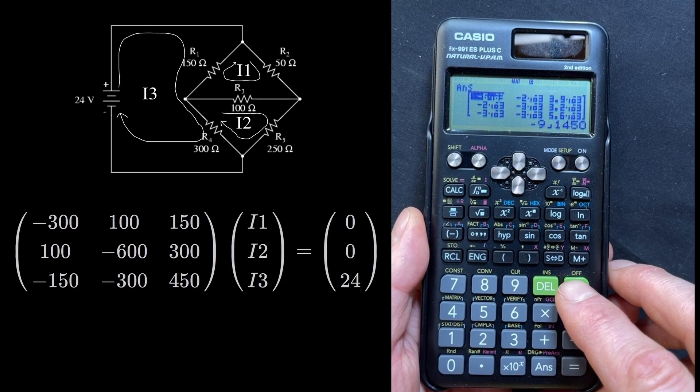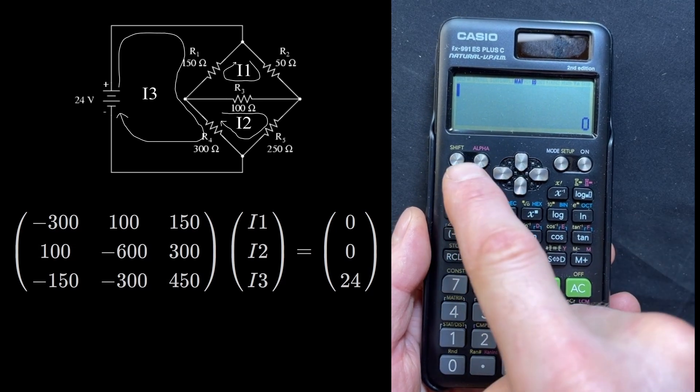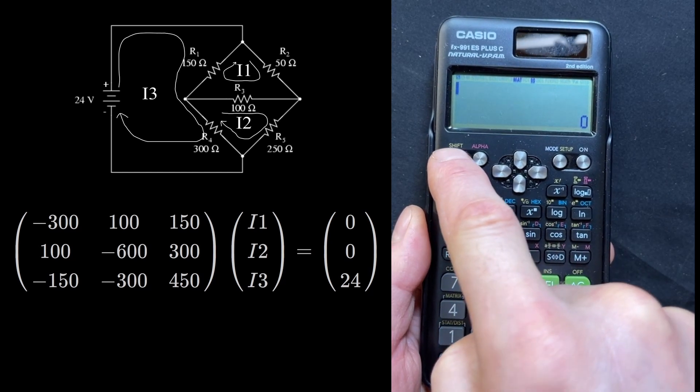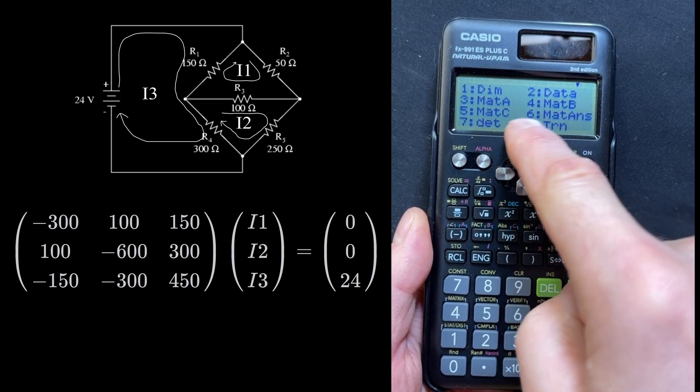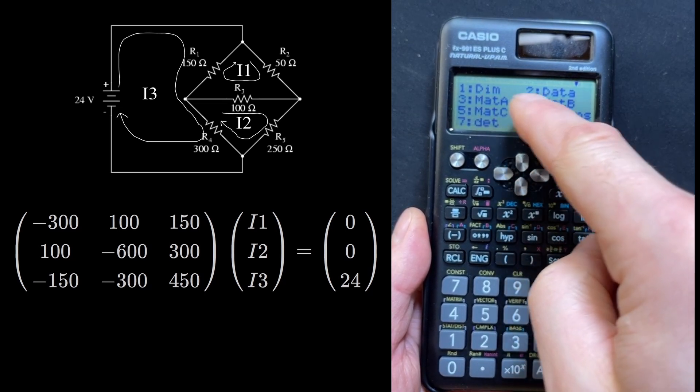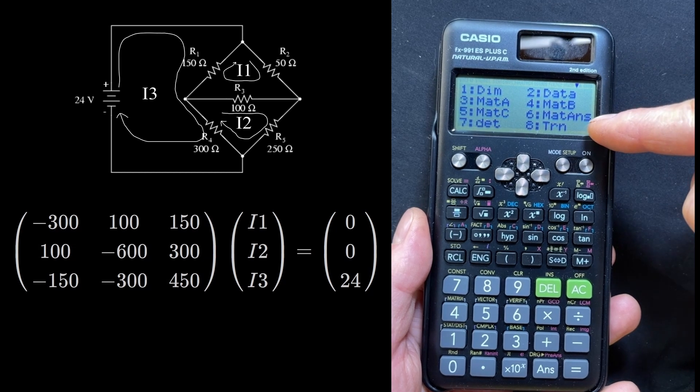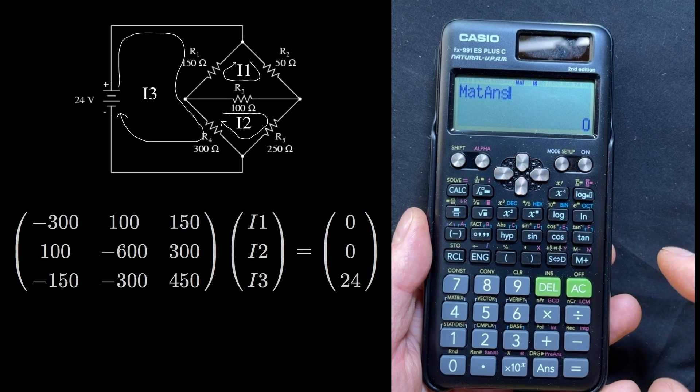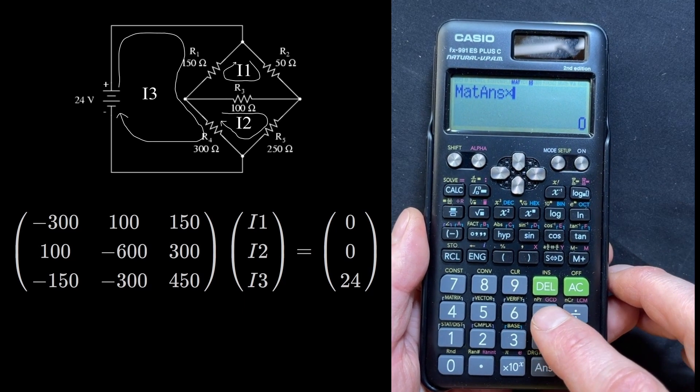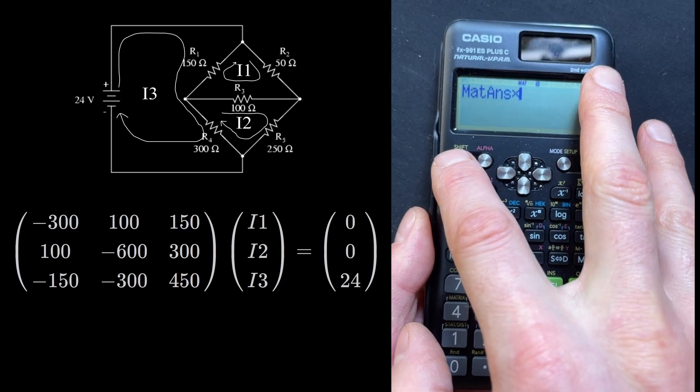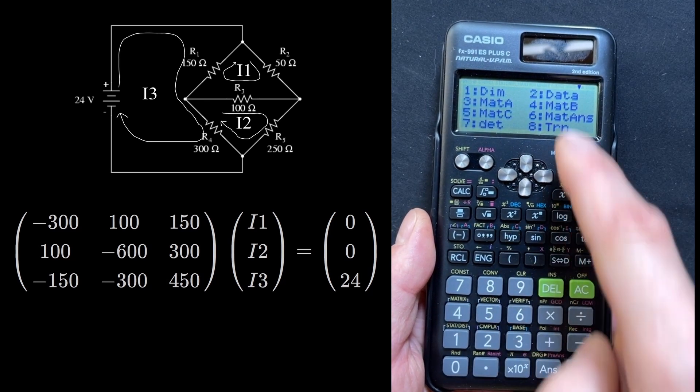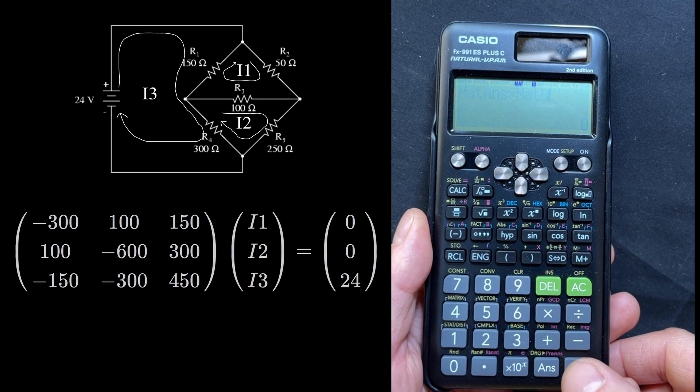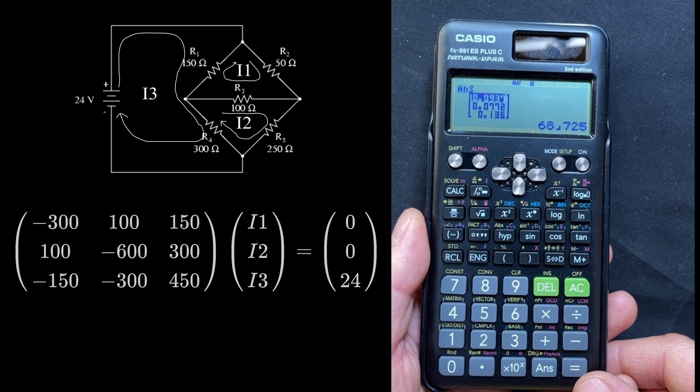Okay, I'm going to clear out of this again. And now I need to multiply the inverse of A by B. So I can go shift 4 to get all the different options within matrices. If I go to 6 here, which is the matrix answer, that gives me the answer that I just calculated, which is the inverse of A, and multiply it by B. Again, shift 4 to pick the matrix I want to put up there, which is going to be matrix B, and hit enter. And that gives me the answer.